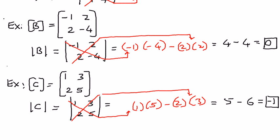So in these three examples, we have seen that the value of the determinant could be a positive value, the value of a determinant could be a zero value, and the value of a determinant could be a negative value. We will use all of this information moving forward to evaluate determinants.